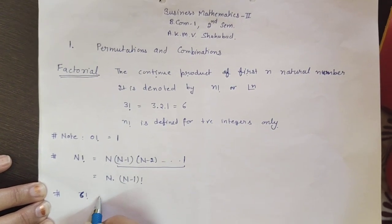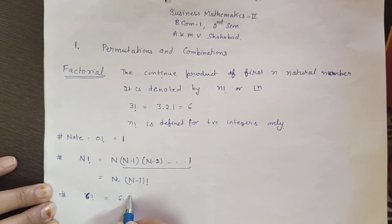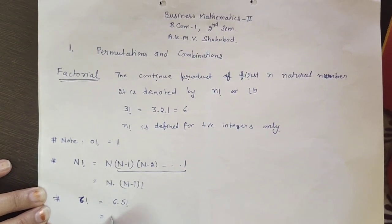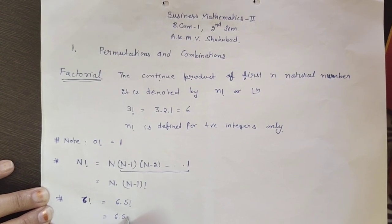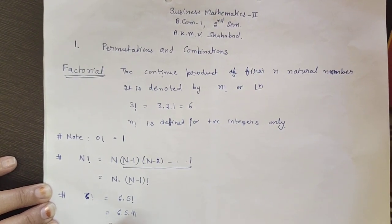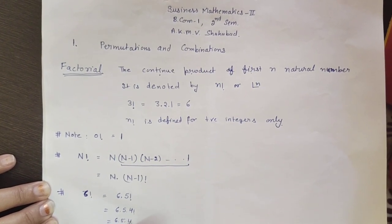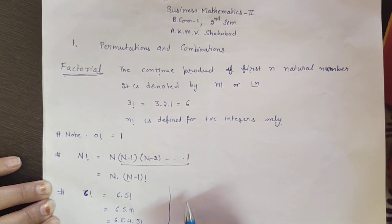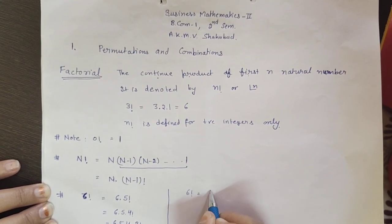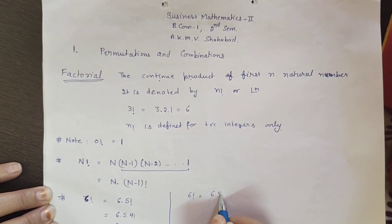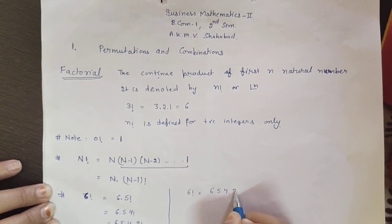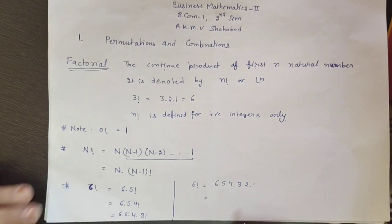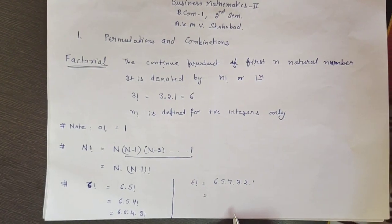We can write 6 factorial as 6 × 5 factorial, or 6 × 5 × 4 factorial, or 6 × 5 × 4 × 3 factorial. Fully expanded, 6 factorial = 6 × 5 × 4 × 3 × 2 × 1.